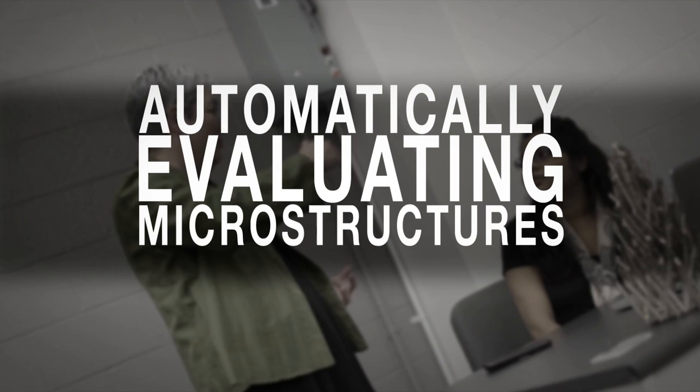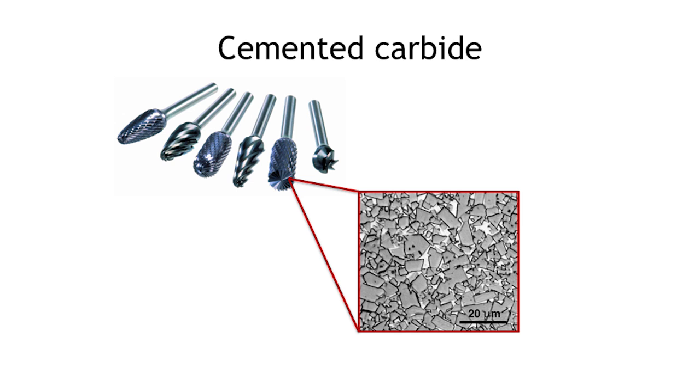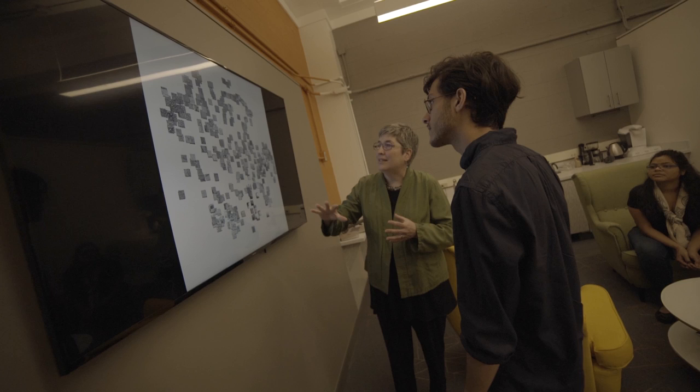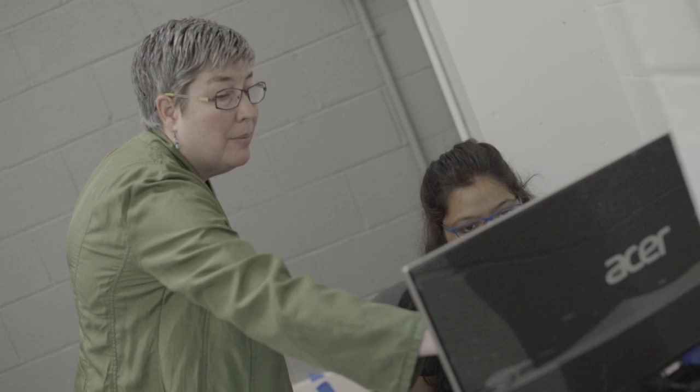The field of material science has been the science of microstructure — of these images, these pictures of what's happening inside materials. It's not at all uncommon for a material scientist to have job responsibilities that are simply looking at pictures and interpreting what they see. In that sense, it's very like a radiologist, a medical doctor who looks at an x-ray, a CAT scan, or an MRI and interprets what he or she sees in that image — we do the same, but we do it for materials.